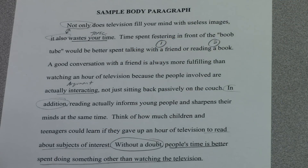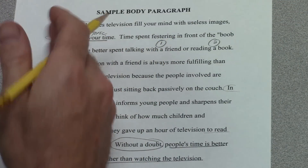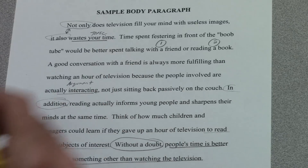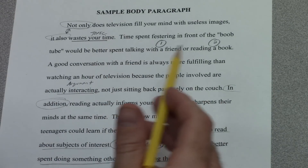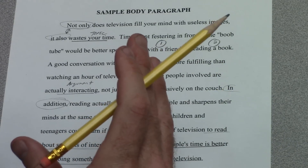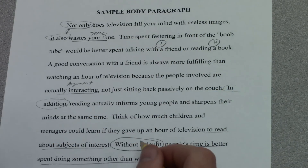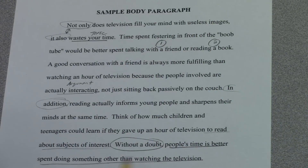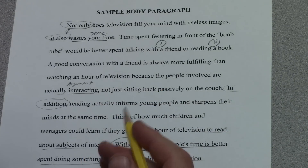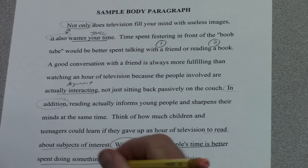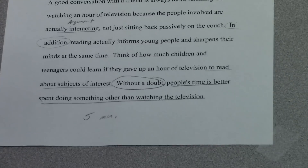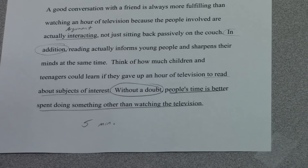So when you write the second body paragraph, let's make sure we're using logical transitions. We have a clear topic sentence, a couple of specific vivid examples to help back up our point. When we get to the end, we want a concluding sentence of some sort that wraps up the paragraph nicely. This should take you roughly five minutes to draft body two. Go to it.